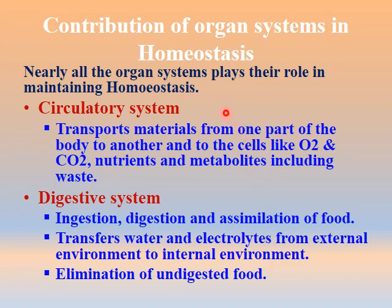Now let us see the contribution of different organ systems in homeostasis. Nearly all organ systems play a role. First, the circulatory system is involved in transport of material from one part of the body to another — from blood to cells and cells to blood. It is important in supply of nutrients and oxygen, and for collection of carbon dioxide and various metabolites produced at the cellular level.